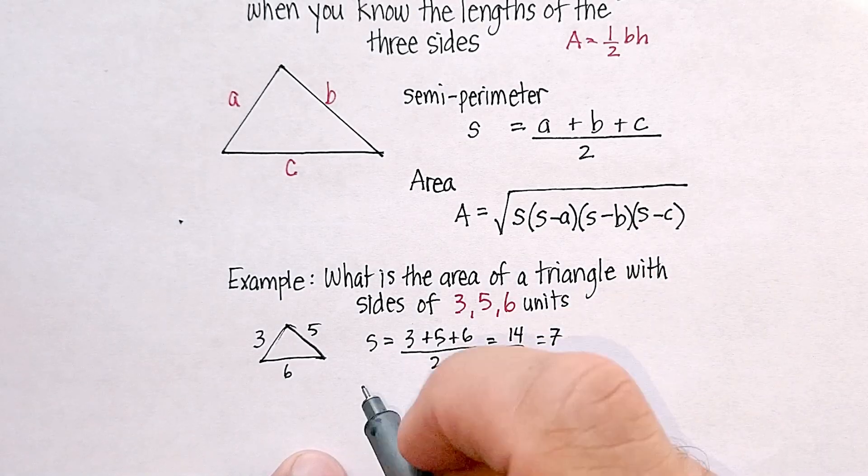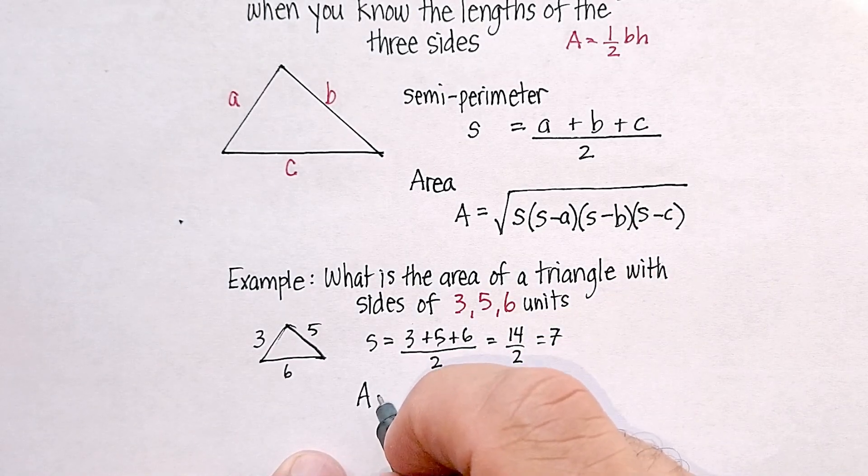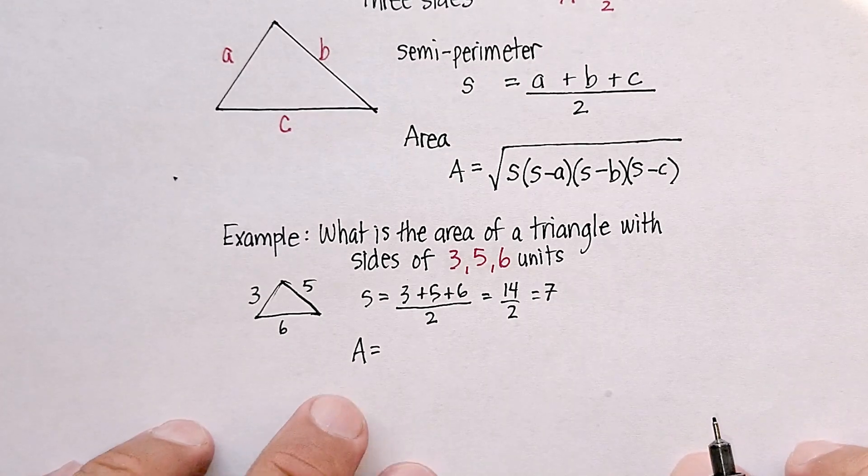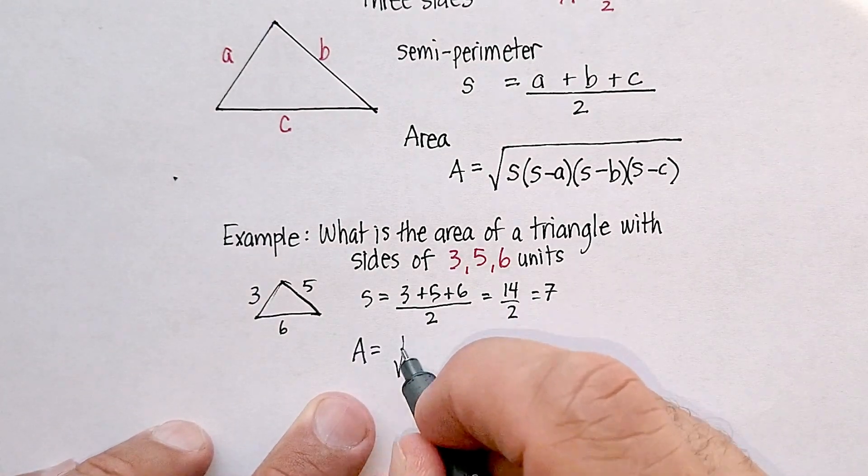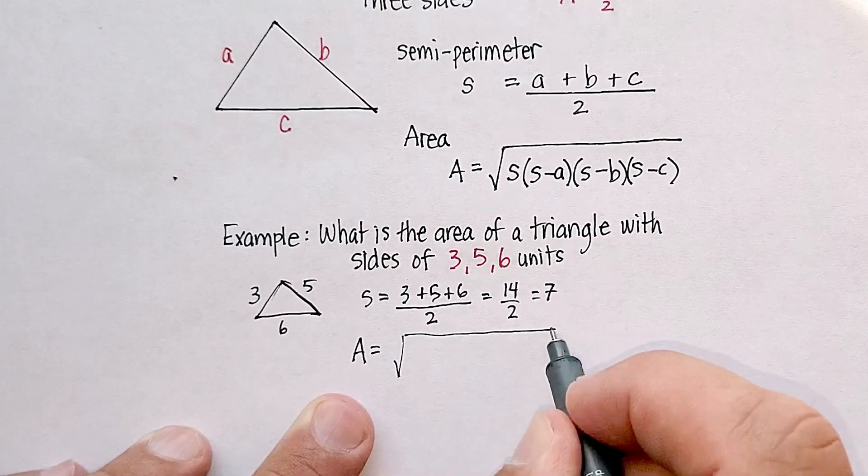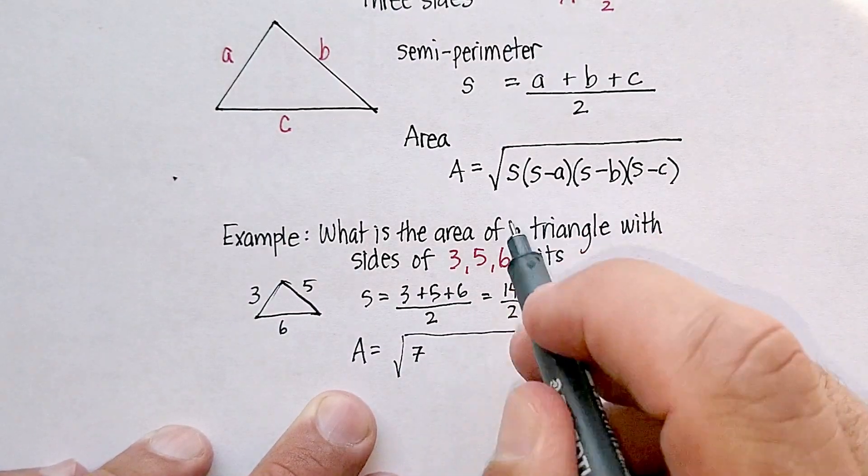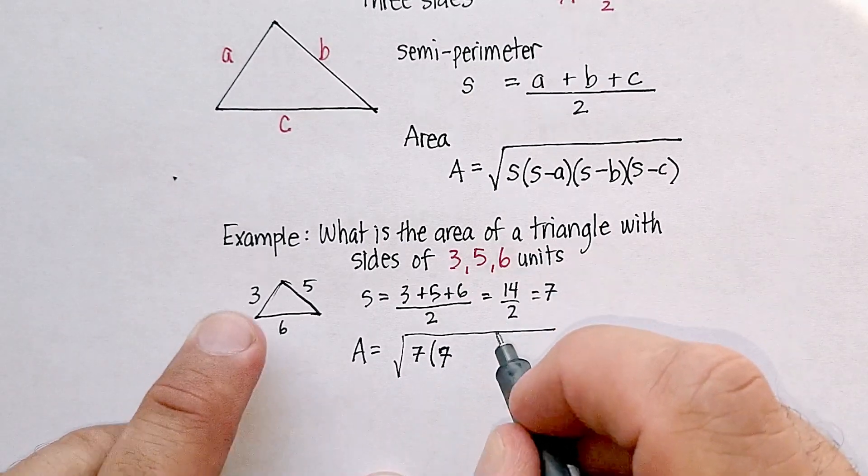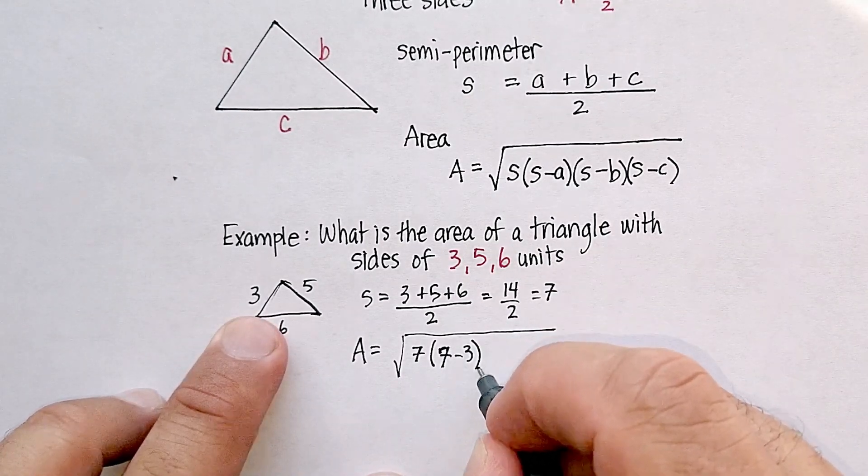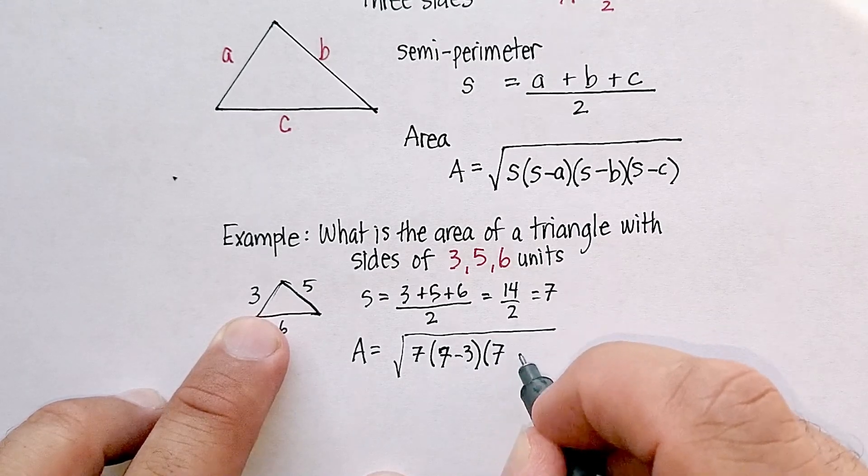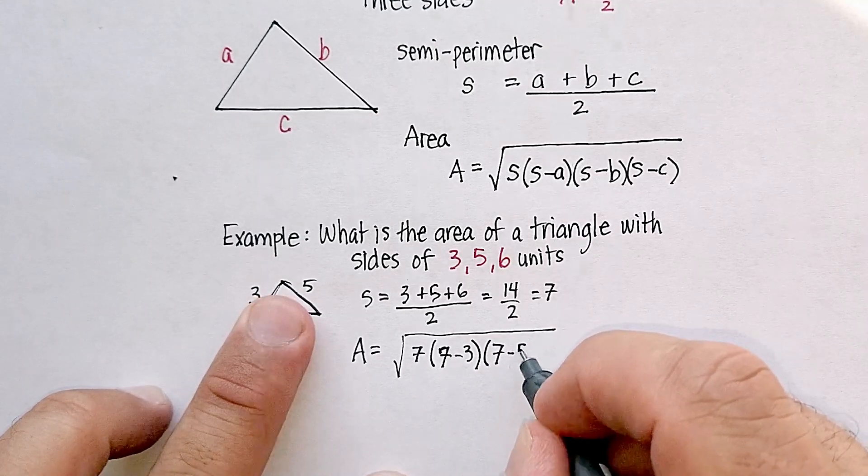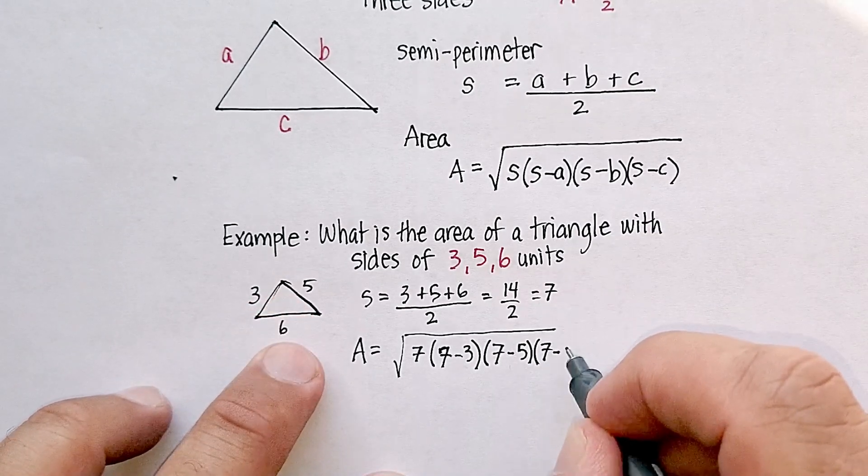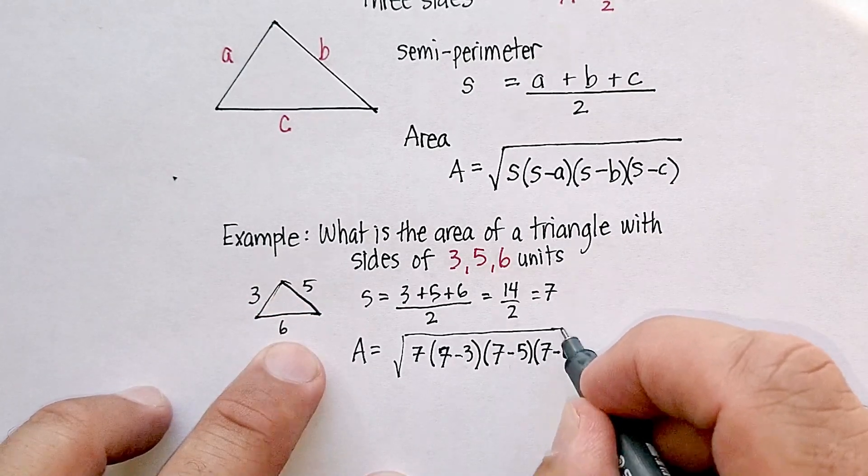So now let's go ahead and put it into this equation. We know that the area is going to be equal to the square root of the semi-perimeter 7, times the semi-perimeter 7 minus 3, times the semi-perimeter 7 minus 5, times the semi-perimeter 7 minus 6.